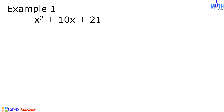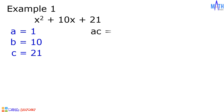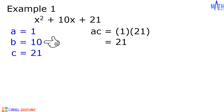In this quadratic trinomial, a is equal to 1, b is equal to 10, and c is equal to 21. Let us multiply the values of a and c: 1 times 21 is equal to 21. Next, let us find factors of 21 that when added equal 10. The factors we need are 3 and 7, since 3 times 7 is equal to 21 and 3 plus 7 is equal to 10.